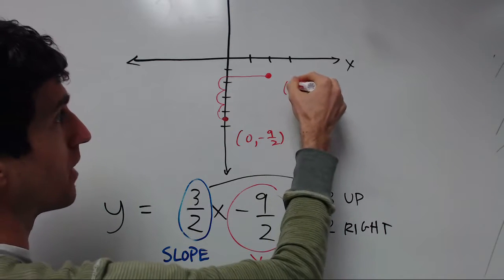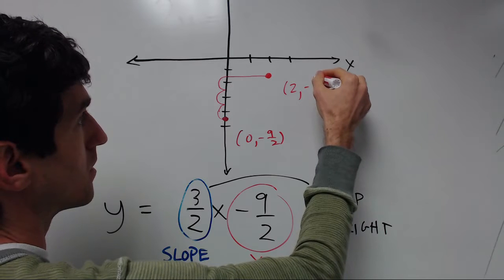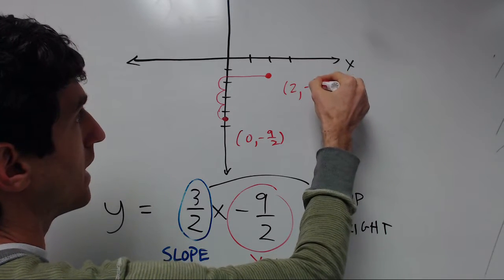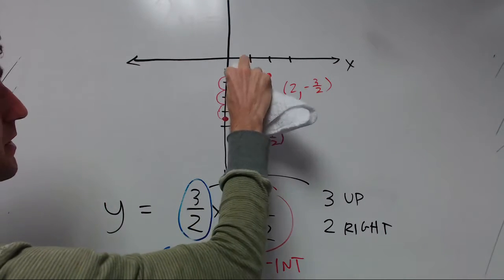And the coordinates of that point are now 2, negative 3 halves. So we don't really want this here now.